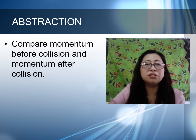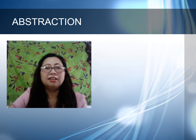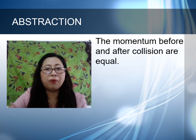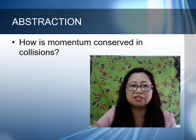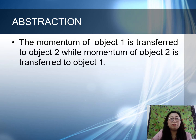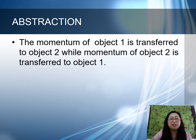Compare momentum before collision and momentum after collision: the momentum before and after collision are equal. How is momentum conserved in collisions? The momentum of object 1 is transferred to object 2, while the momentum of object 2 is transferred to object 1. That is why the momentum before collision is equal to the momentum after collision — therefore, momentum is conserved.